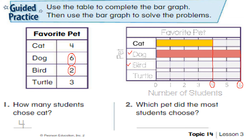For turtle, three students like turtle. Mark number 3 on the graph, draw a line from 3 to turtle, and then draw the bar. This is how your completed bar graph will look. Now we have to answer some questions.